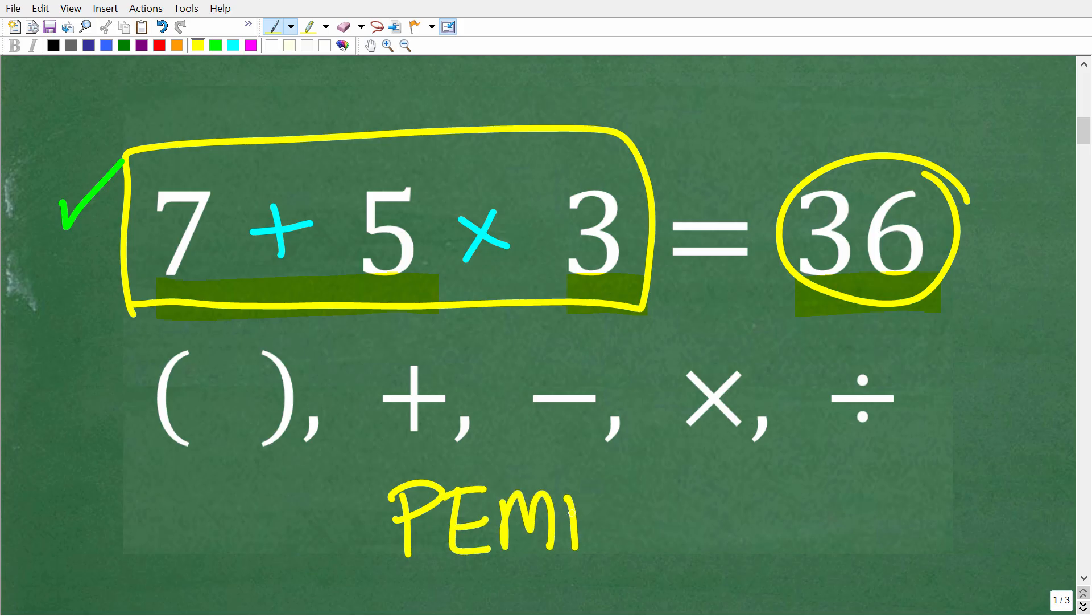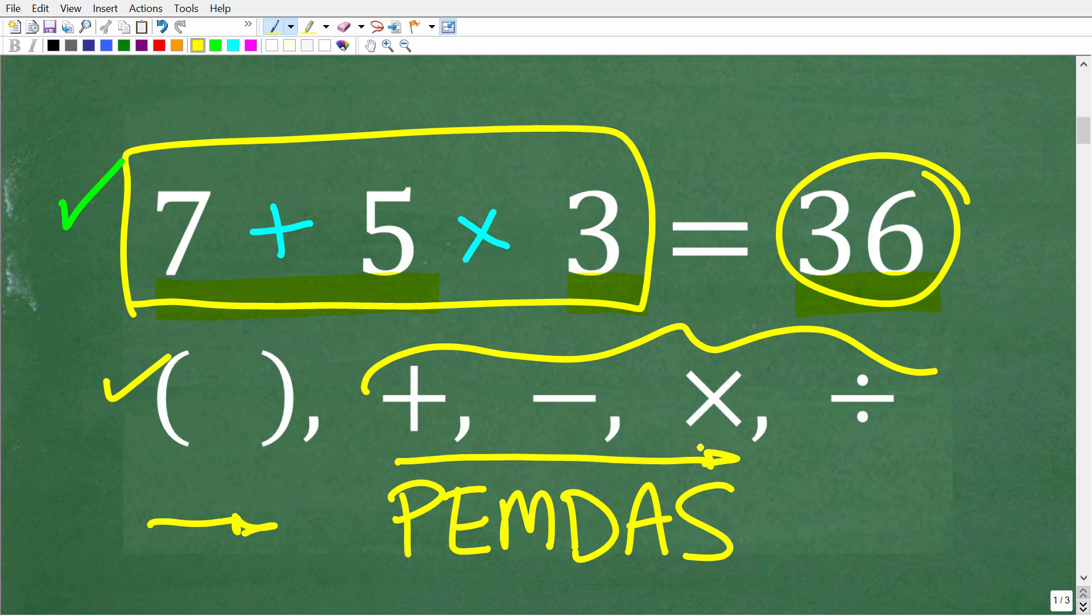So we need to go to our PEMDAS checklist. Now, if you're not familiar with PEMDAS, it's a little acronym that tells us the proper order of operations in a math problem. Now, what is a mathematical operator? Well, it's these things right here to include powers and parentheses. So we need to follow this checklist strictly from left to right in order to produce the right answer.